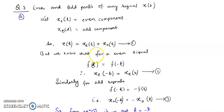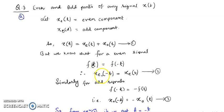Now we know that for a given signal, if it is even and we replace t by minus t, then f(-t) is equal to f(t). So since Xe(t) is even, Xe(-t) will be equal to Xe(t). This is denoted as equation number 2.